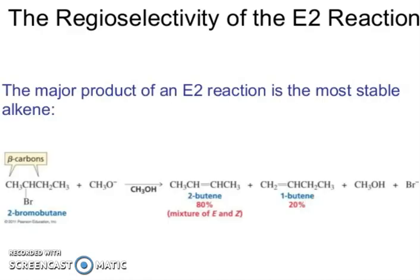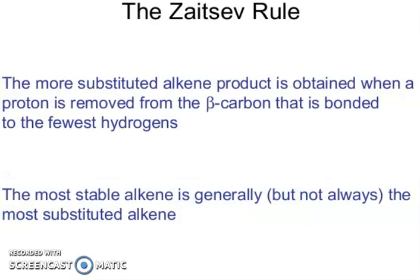Now, regioselectivity of eliminations. The major product of an elimination is the most stable alkene. You can see the beta carbons. With methoxide in methanol, it gives 2-butene as 80% — a mixture of E and Z — and 1-butene only 20%. Why? Just keep one rule in mind: the Zaitsev rule. That rule is: the more substituted alkene product is obtained when a proton is removed from the beta carbon that is bonded to the fewest hydrogens. The most stable alkene is generally the most substituted alkene — and that is the Zaitsev rule.